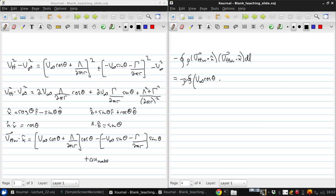plus lambda over 2 pi r cos theta plus gamma over 2 pi r sin theta plus delta u wake dL. And in the lecture notes this has gone through step by step, here I'll skip to the result.